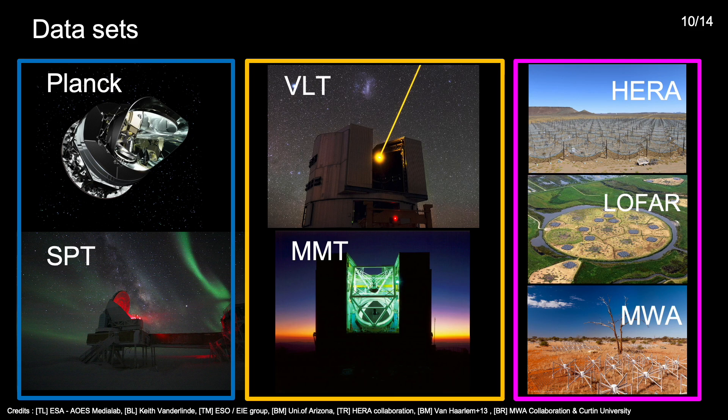So studying the previous plots effectively gave us some predictions. Now let's take a look at the data and the results of their joint analysis. In terms of datasets, for CMB we use constraints derived from Planck and SPT data. For Lyman line we use IGM neutral fraction constraints derived from high redshift galaxy and quasar observations with VLT, MMT and several other observatories. And for 21cm we include power spectrum constraints from HERA, LOFAR and the MWA.